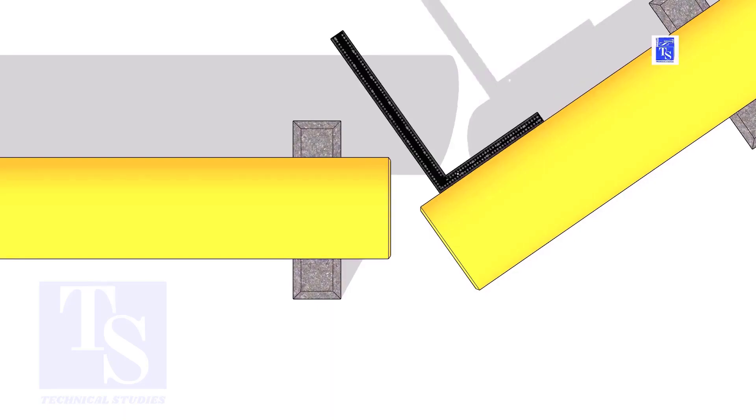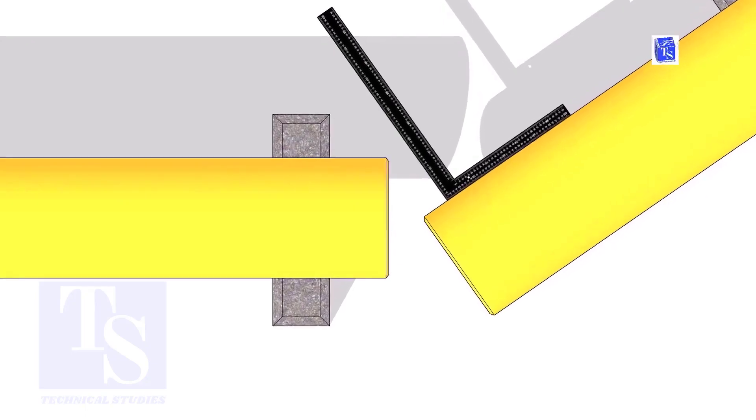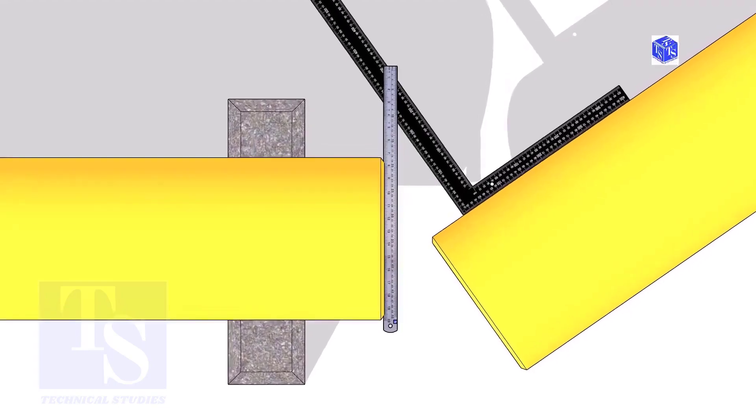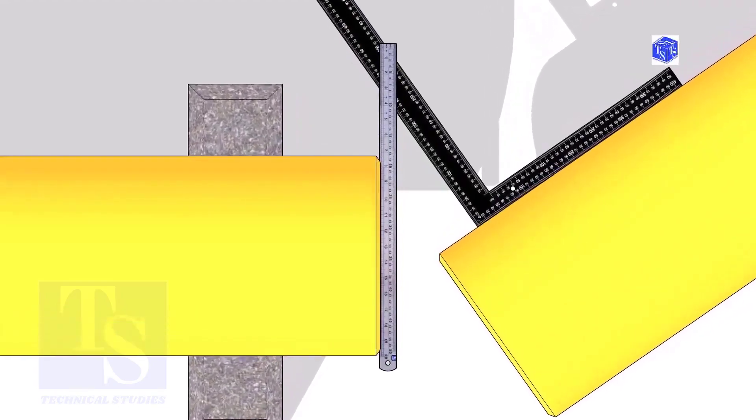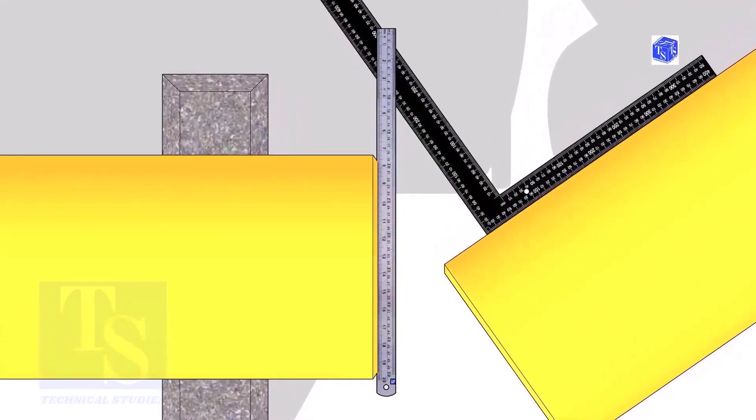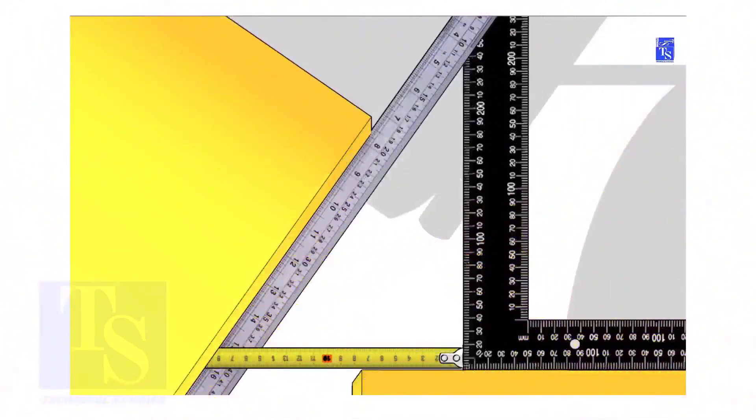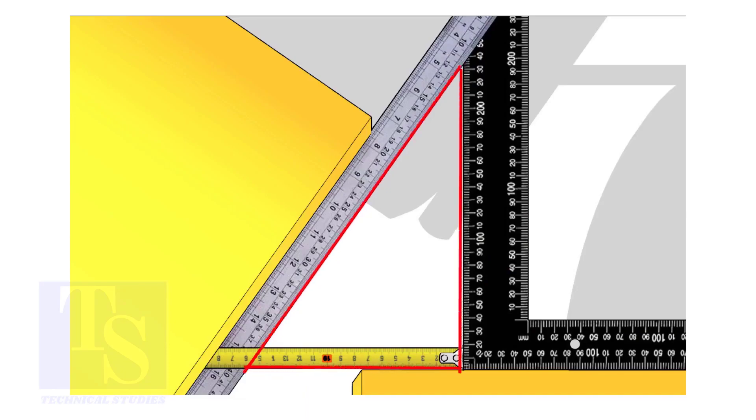Hold a right angle on the pipe as shown. Hold a scale on the other pipe as shown. Measure and note down the dimensions of the triangle.